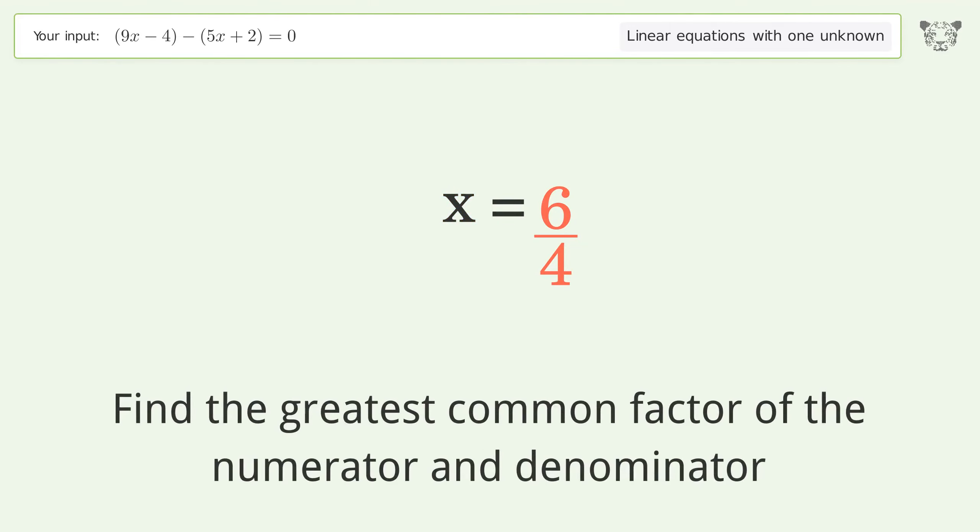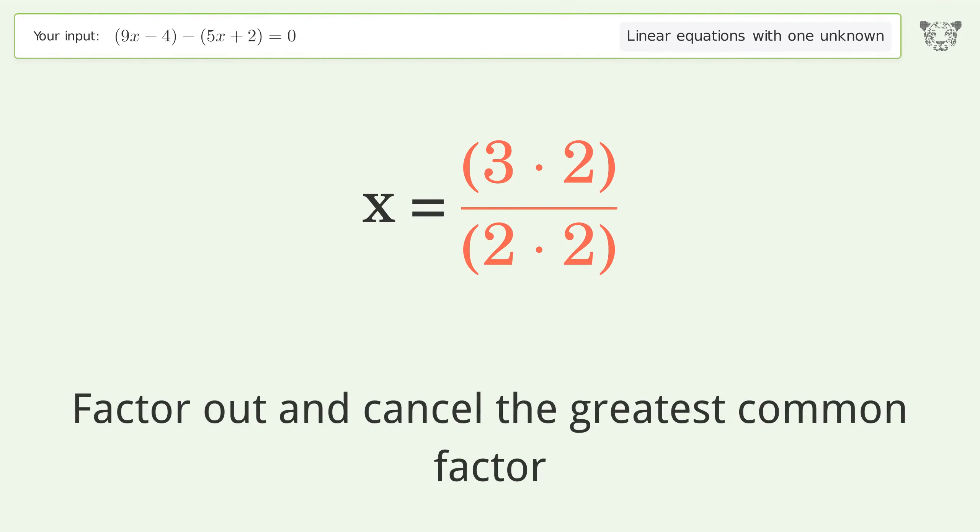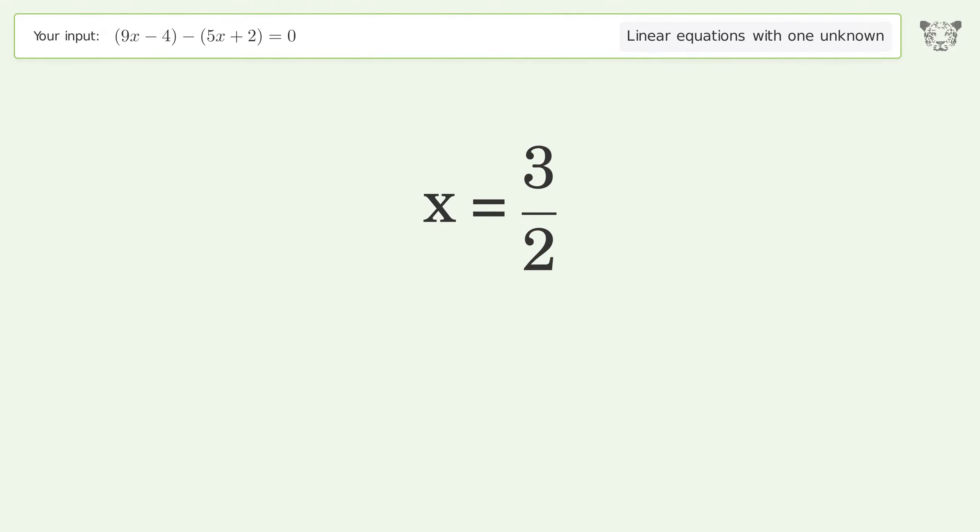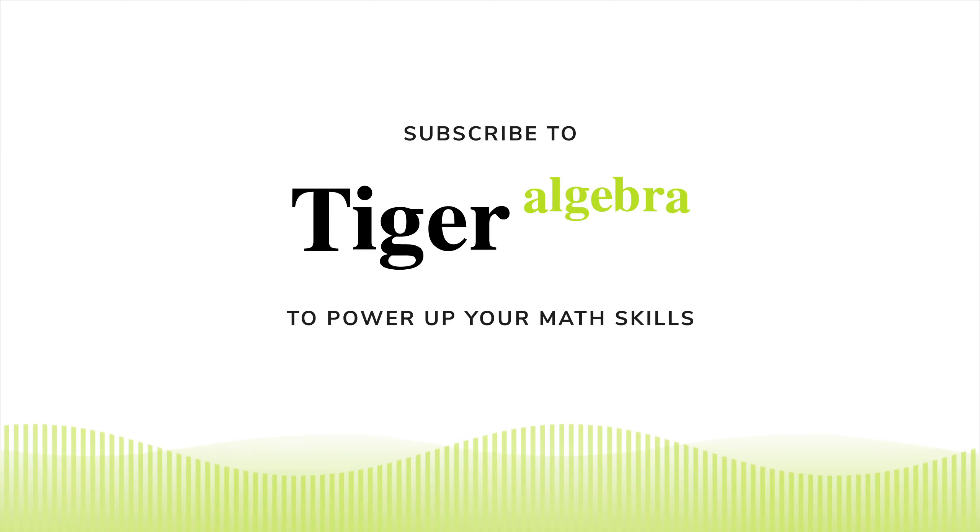Find the greatest common factor of the numerator and denominator. Factor out and cancel the greatest common factor. And so the final result is x equals 3 over 2.